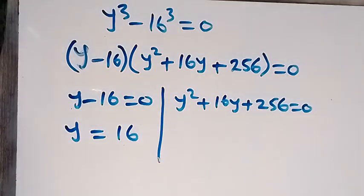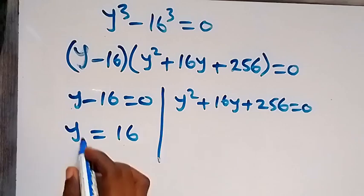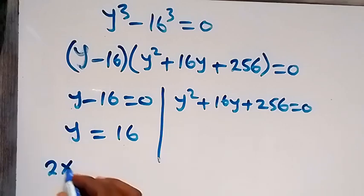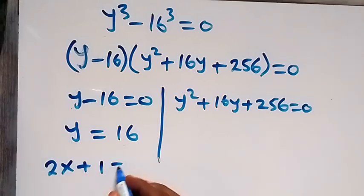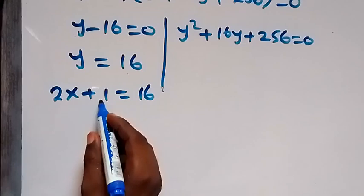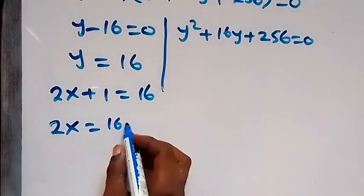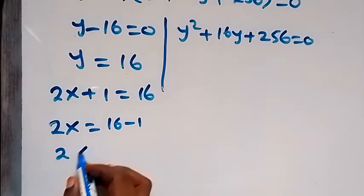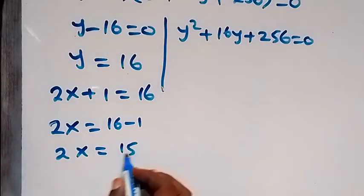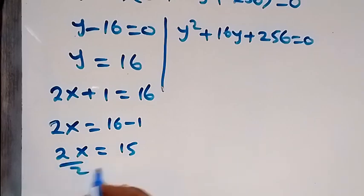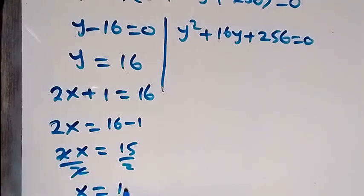Since we represented y as 2x plus 1, we substitute: 2x plus 1 equals 16. Subtracting 1, we get 2x equals 15, divided by 2. So x equals 15 over 2. This is one of the values of x.